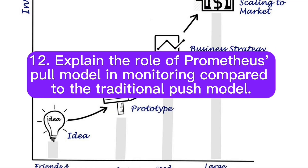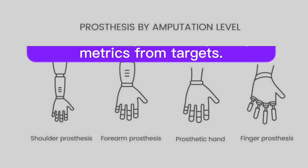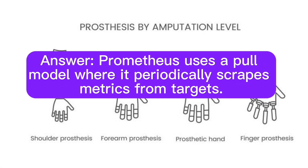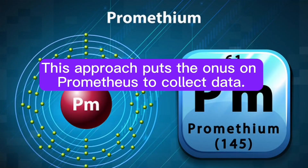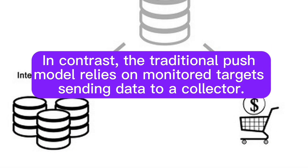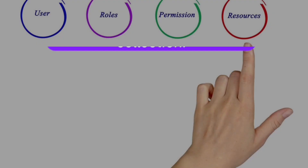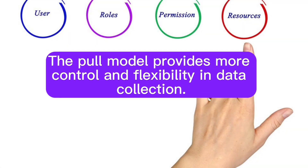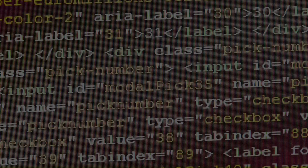Explain the role of the Prometheus pull model in monitoring compared to the traditional push model. Prometheus uses a pull model where it periodically scrapes metrics from targets. This approach puts the onus on Prometheus to collect data. In contrast, the traditional push model relies on monitored targets sending data to a collector. The pull model provides more control and flexibility in data collection.